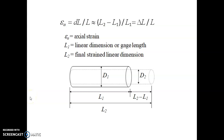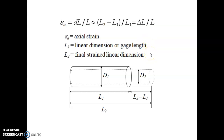How are strains measured? The strain is measured from its definition, because it is delta L by L. We know L, and if we can measure delta L we can simply calculate the strain. That is the theory behind strain measurement.